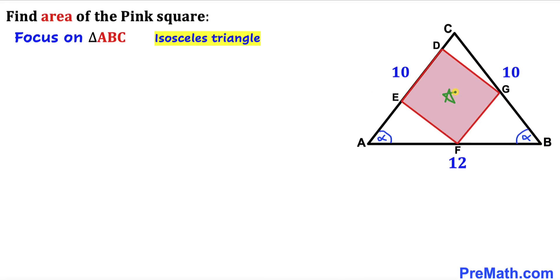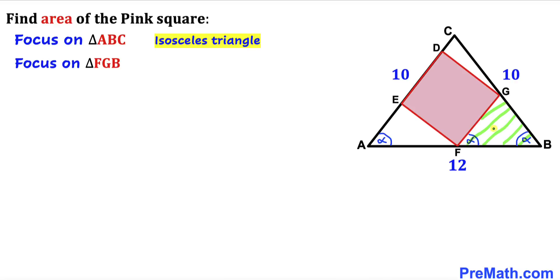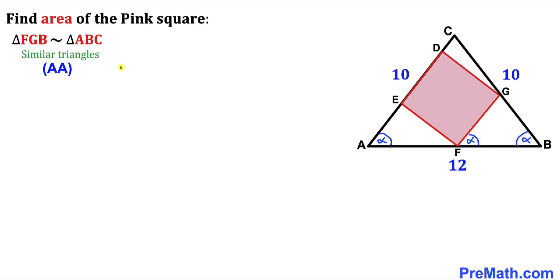Now let's focus on the pink square. Side ED is parallel to side FG, so the corresponding angles are congruent — if one angle is alpha, this angle is alpha as well. Therefore triangle FGB is an isosceles triangle, and triangles FGB and ABC are similar triangles according to the angle similarity theorem.